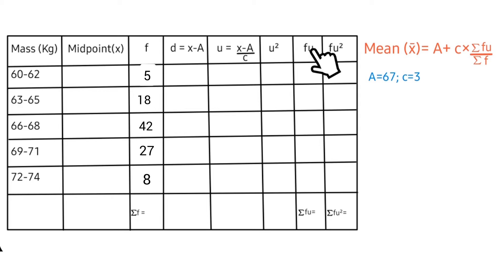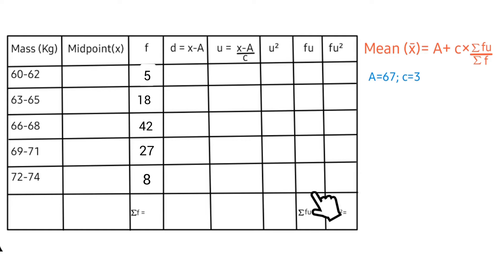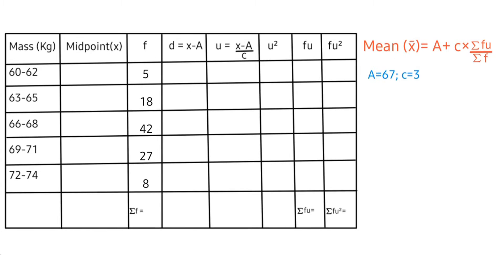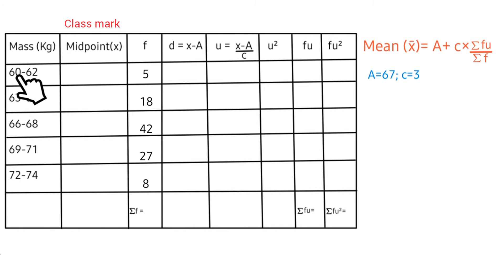The fu column requires us to add up all the fu values, then divide by summation f — meaning we add up all the frequency values. Let's begin to fill in all the spaces. For the first midpoint or class mark: 60 plus 62 gives 122, then 122 divided by 2.